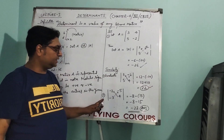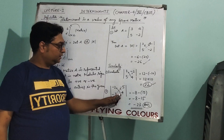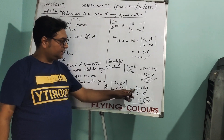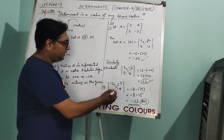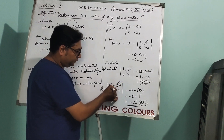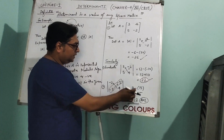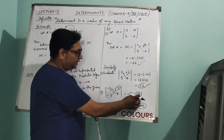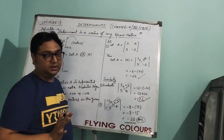Let's take another example with entries minus 2, minus 5, minus 3, 4. Do the same procedure: product of principal diagonal is 4 times minus 2 = minus 8. Then use the minus sign by the property and take the product of the conjugate diagonal: minus 5 times minus 3 = minus 15. So the value remains negative: minus 8 minus 15 = minus 23.